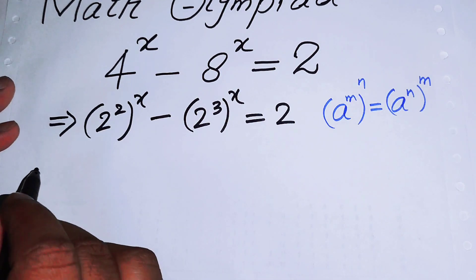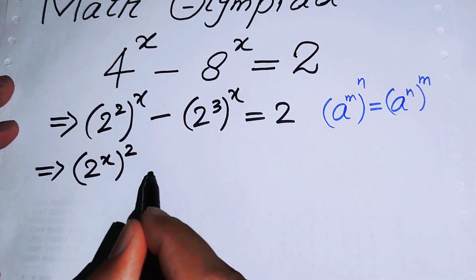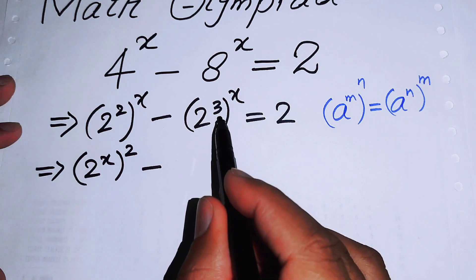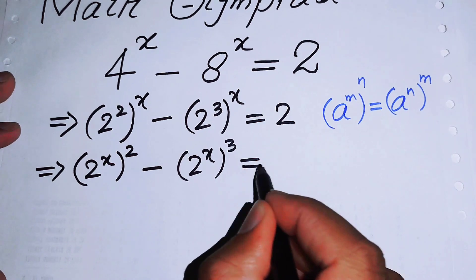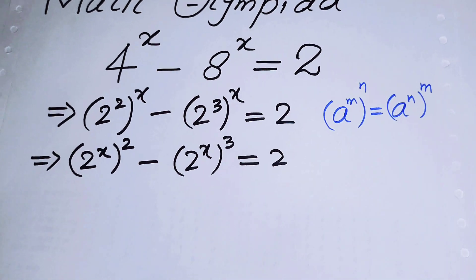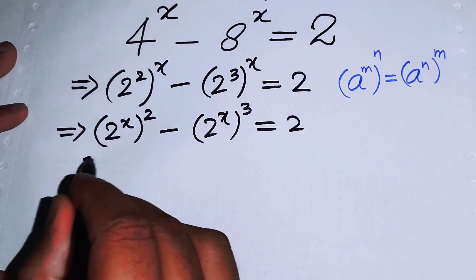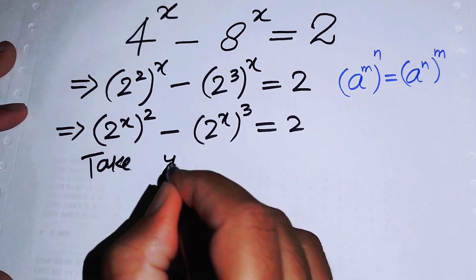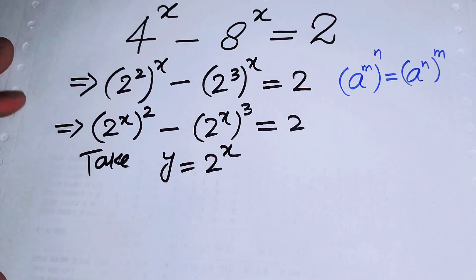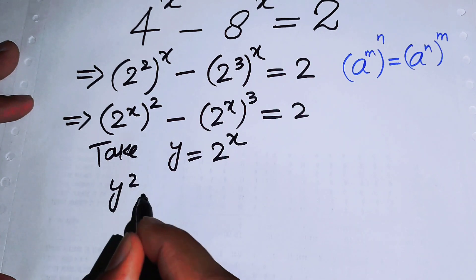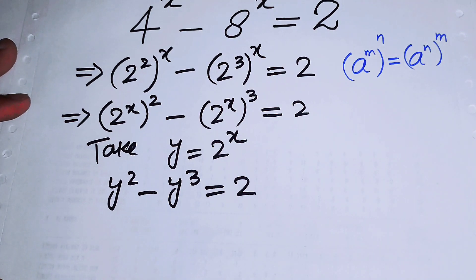We interchange the exponents on both terms, so the expression becomes 2 to the power of x, whole squared, minus 2 to the power of x, whole cubed, equals 2. We then simplify by letting y equal 2 to the power of x, so the expression becomes y squared minus y cubed equals 2.